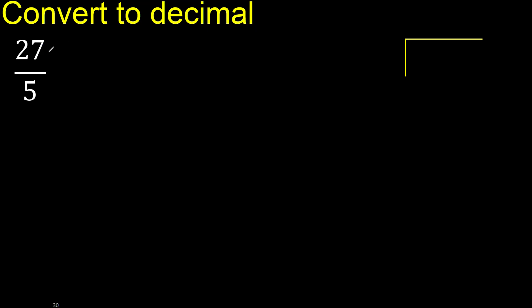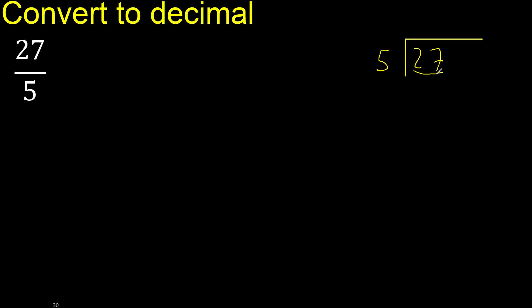27 divided by 5. 2 is less, therefore next 27. 27 is not less, therefore we work with 27.